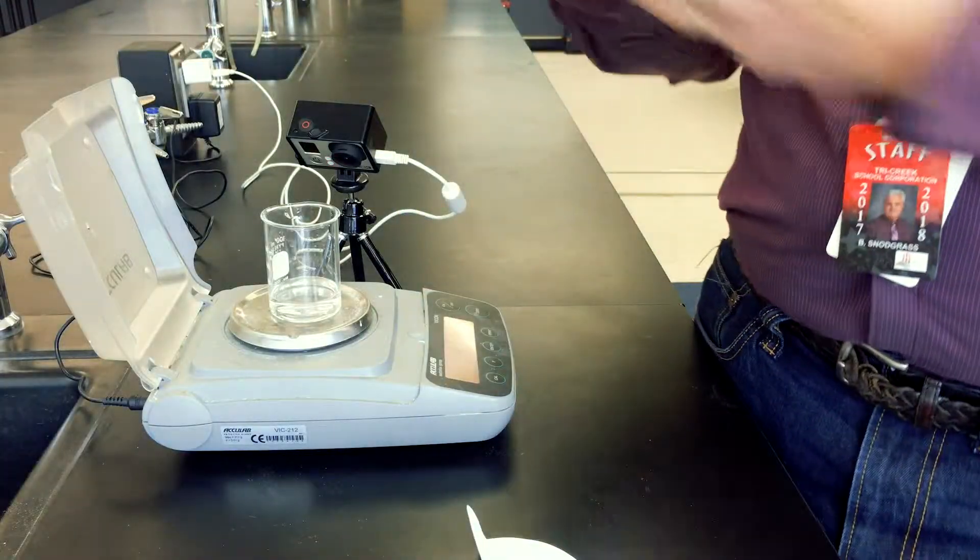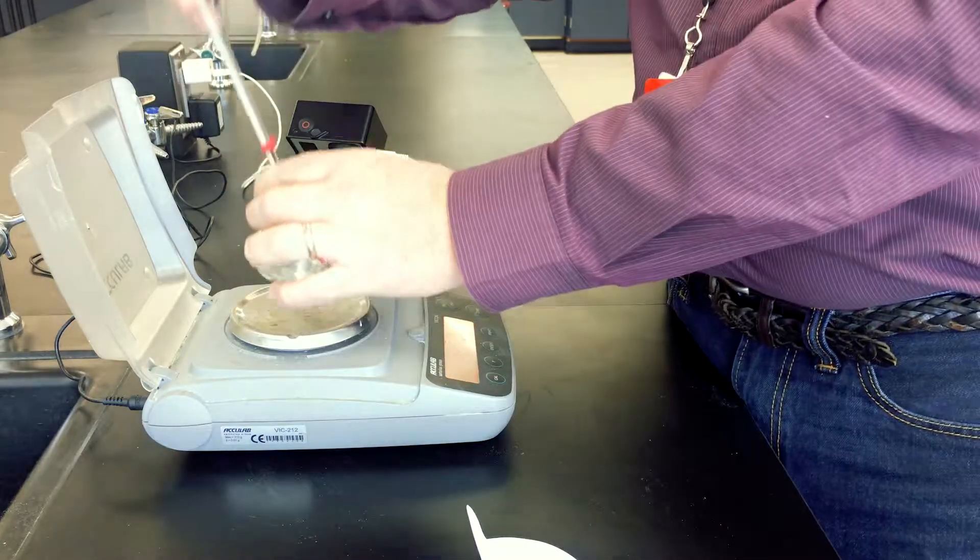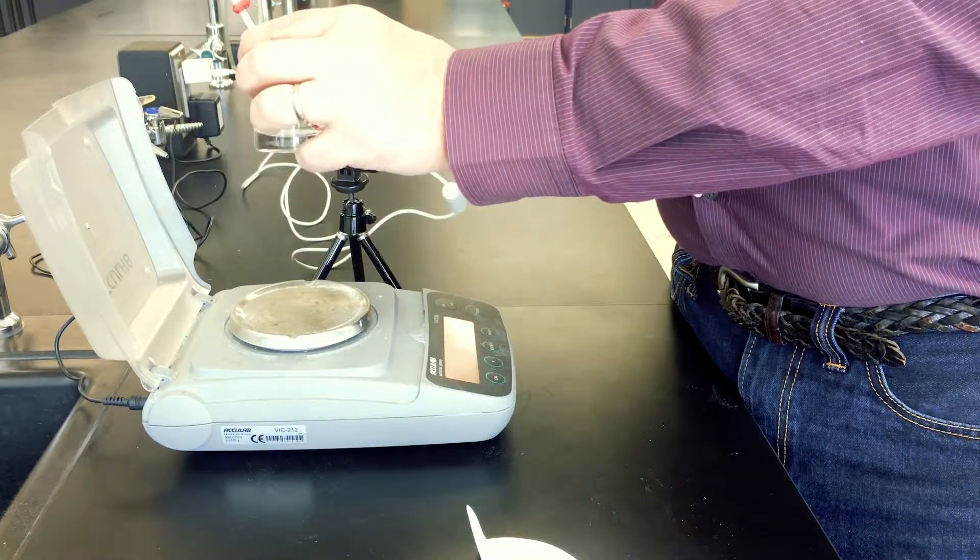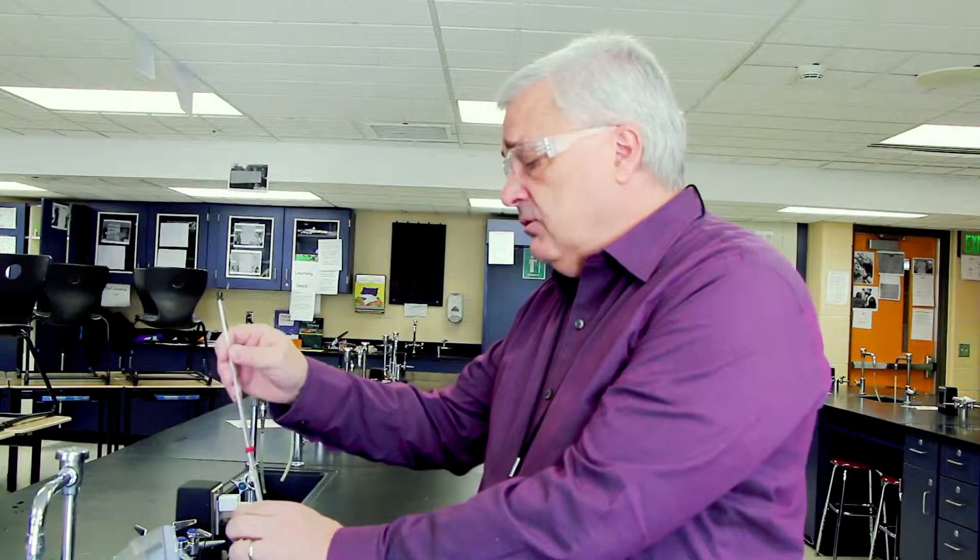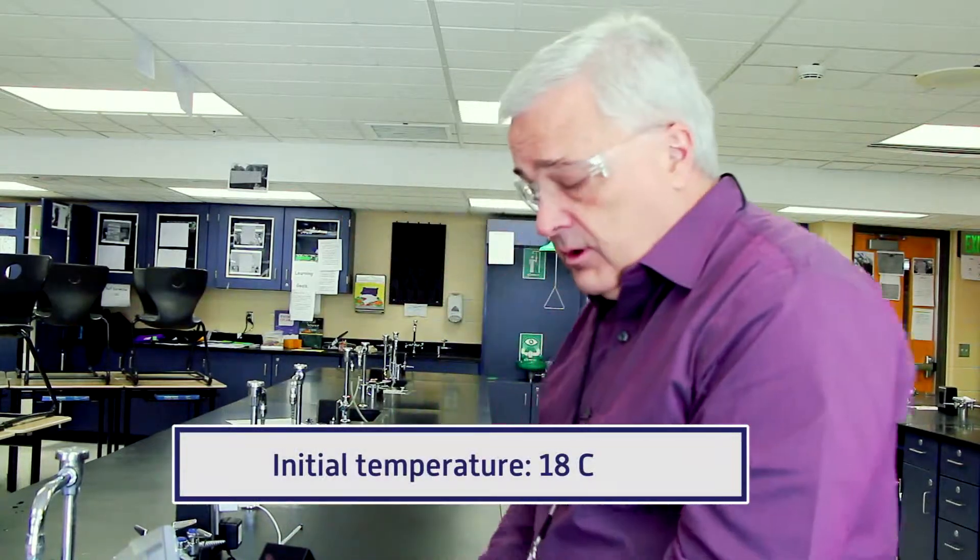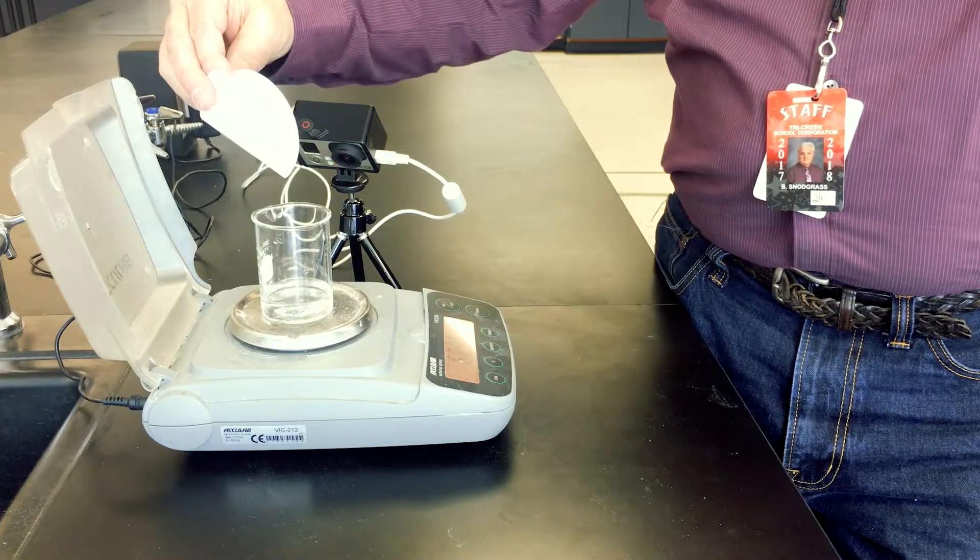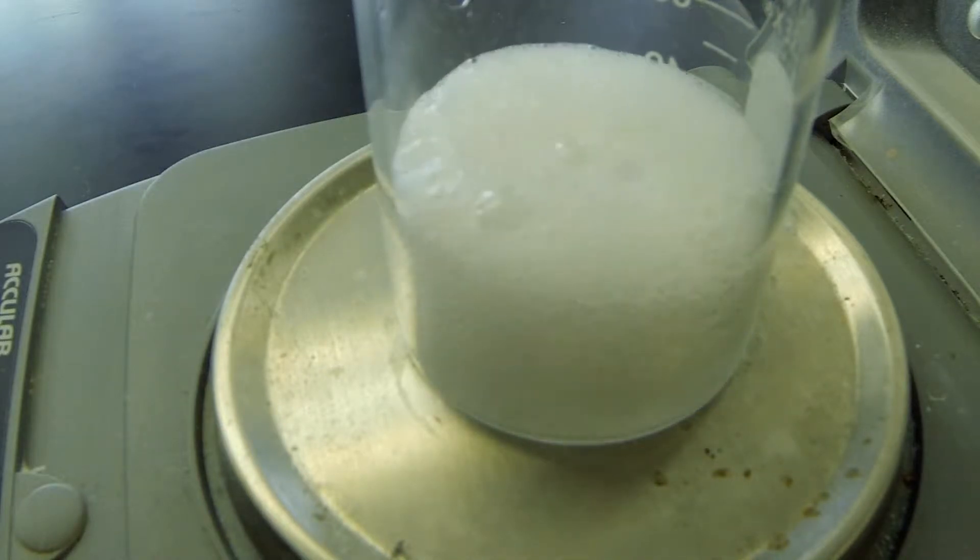When the reaction takes place, we're going to produce carbon dioxide, which is going to escape. As a side thing, we're going to take the initial temperature of the liquid, and it comes to 18 degrees Celsius today. So we're beginning with 18 degrees as our beginning temperature. Now we're just using the folded filter paper to channel the sodium bicarbonate into the liquid. We're going to add that and the reaction begins to take place.